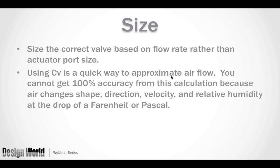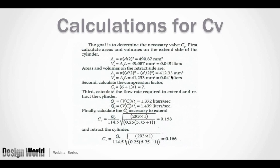Using C sub V (Cv) is a quick approximation for sizing a valve and a useful comparison between valves. However, Cv calculations are not 100% accurate because you need to know inlet and back pressures, temperatures, and other variables. Few people fully understand the Cv calculation formula, and fewer still go through the full calculation. The slide shows what you'd need to determine Cv for a valve or system to calculate flow — it's fairly complex and not something most people will work through in practice.